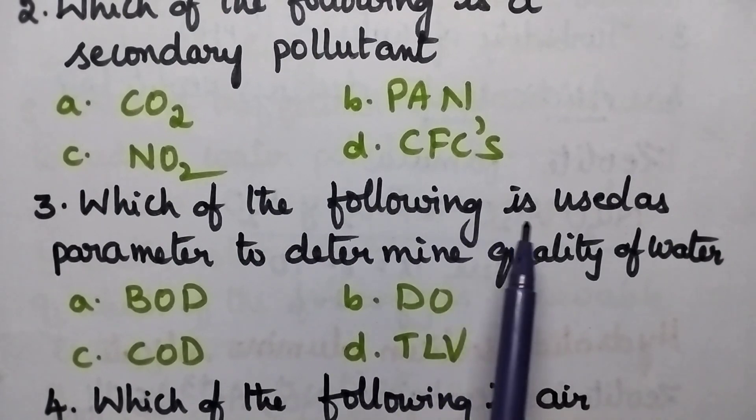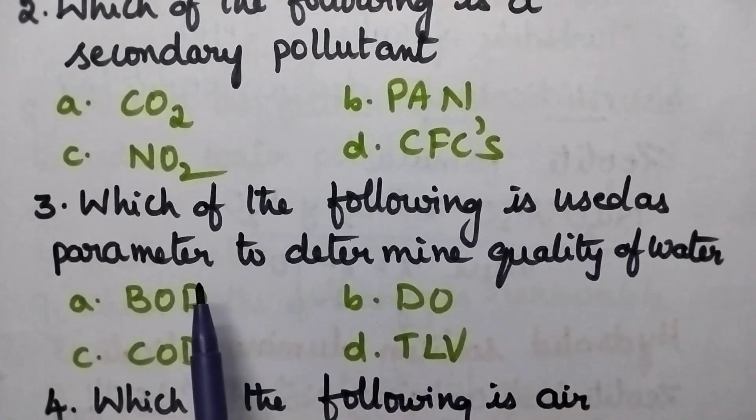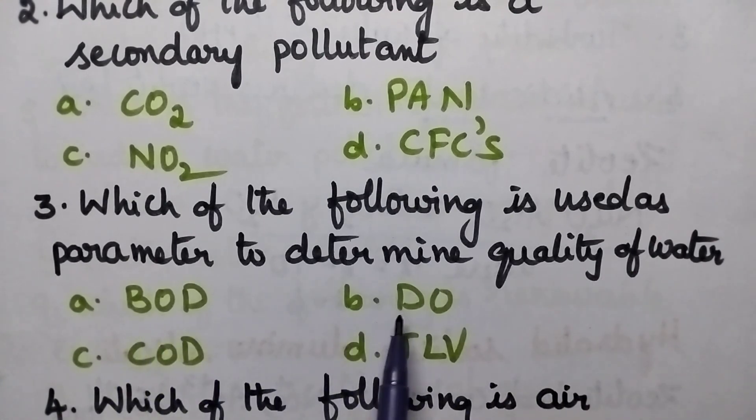Which of the following is used as parameter to determine quality of water? A: BOD, B: DO, C: COD, and D: TLV.